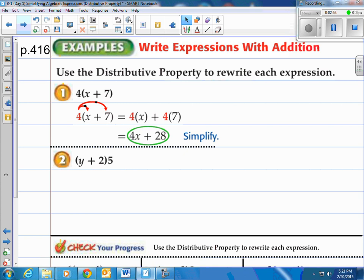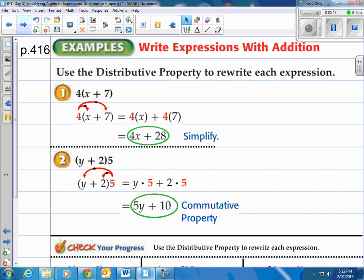How about the second one here? The quantity of y plus 2 times 5. We're going to take that 5 and distribute it into the y plus 2. When we do that, we take y times the 5 and we take the 2 times the 5. The 5 is being distributed to the inside. We end up with 5 times y, because we can't do anything other than saying 5 times y since we don't know what y is. But we do know what 2 times 5 is: 10. It states the commutative property because they've switched, 5y and y times 5.